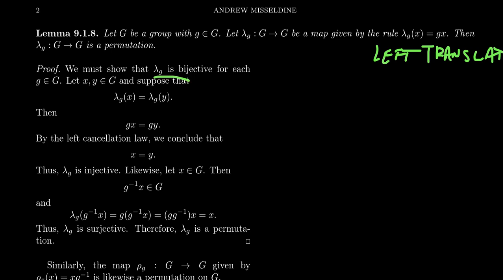We have to show λ_g is bijective for any element g. Take two elements x and y in the group and suppose their images are the same: λ_g(x) = λ_g(y). By definition, that means gx = gy. Since we have a factor of g on the left of both sides, we can cancel it, and we get x = y. So left cancellation shows that this map is injective.